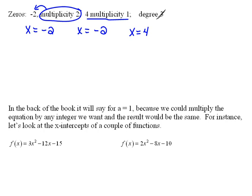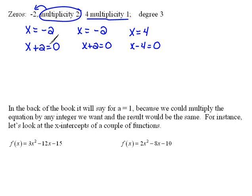Because this is a degree 3 polynomial, this checks out — we should have three answers. To create the polynomial, we move the constant term to the same side as x: x plus 2 equals 0, x plus 2 equals 0, and x minus 4 equals 0. If these all multiply together to equal 0, it's because each one was 0. So x plus 2 times x plus 2 times x minus 4 must also equal 0.